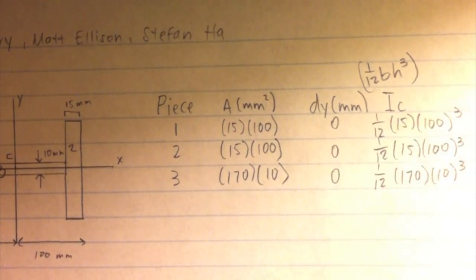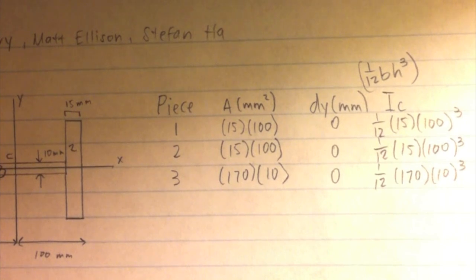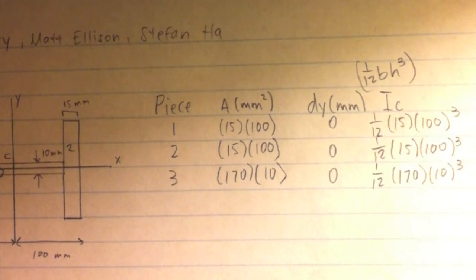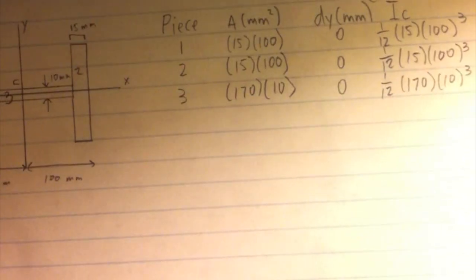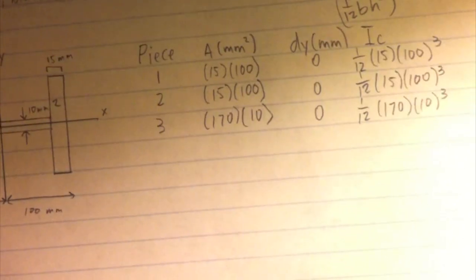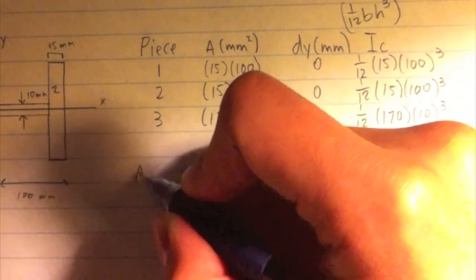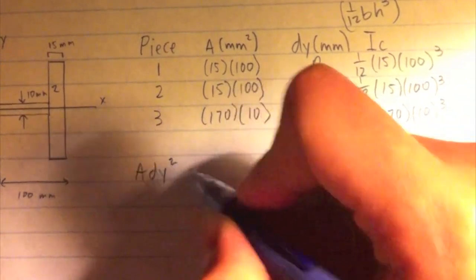As I said before, we will not need to apply the parallel axis theorem because all our dy values are zero, and that simplifies our calculations just a little bit because we don't need to use the formula A dy squared, the area times the distance from the centroid of each piece to the axis squared, which would be the parallel axis theorem.